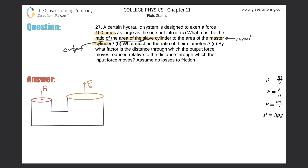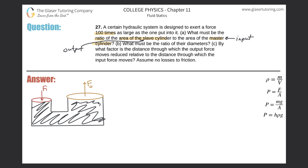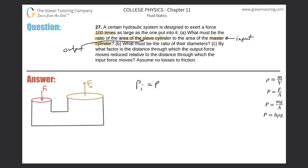There's a certain force inputted into the system and a certain output force that results. This hydraulic system is filled with incompressible fluid. When you push down on the input plunger, the output piston pops up because the fluid is incompressible. Therefore, whatever pressure is created under the input cylinder equals the pressure from the output cylinder — that's Pascal's principle. So the input pressure equals the output pressure.